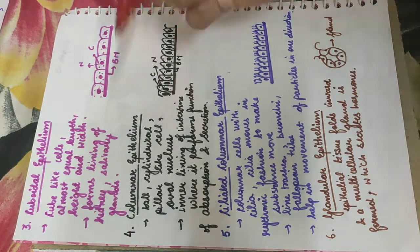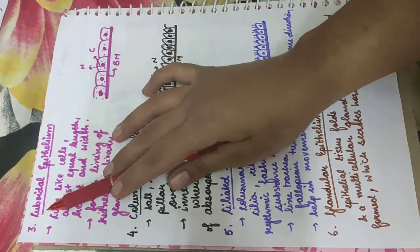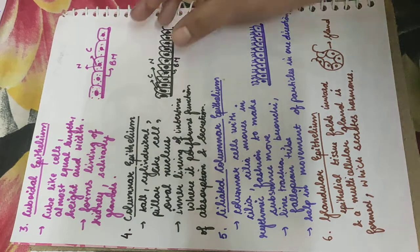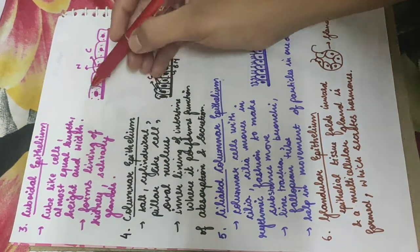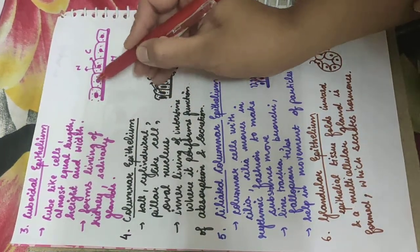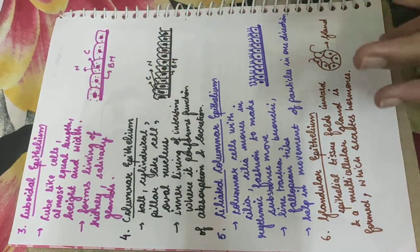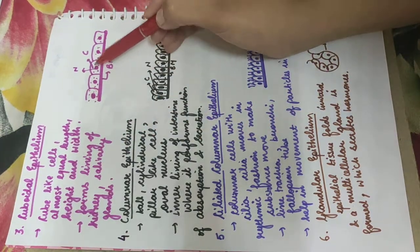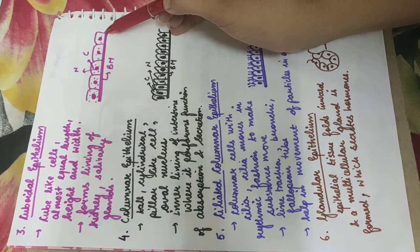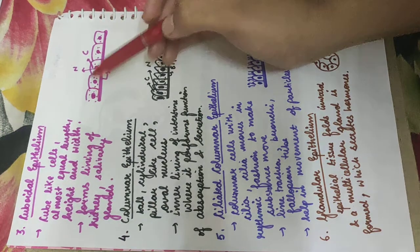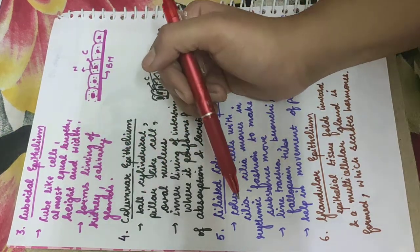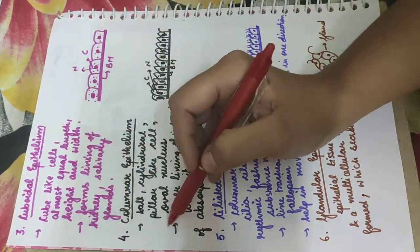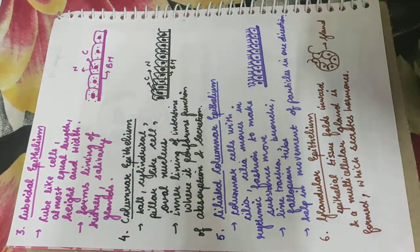Cuboidal epithelium has cells that are cube-like in shape. The length and width of these cubes are almost equal. This is the nucleus, this is the cytoplasm, and the basement membrane which is made up of collagen. Cuboidal epithelium is present in the lining of the kidney and in salivary glands.